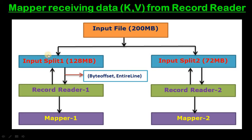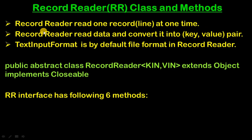Record Reader reads one line of the input split and converts that line into a key-value pair, then passes it to the mapper. Each time Record Reader reads one line from the input split — so however many lines are in the input split, that many times Record Reader reads the file. Record Reader reads data, converts it into key-value pairs, and passes those key-value pairs to the mapper.